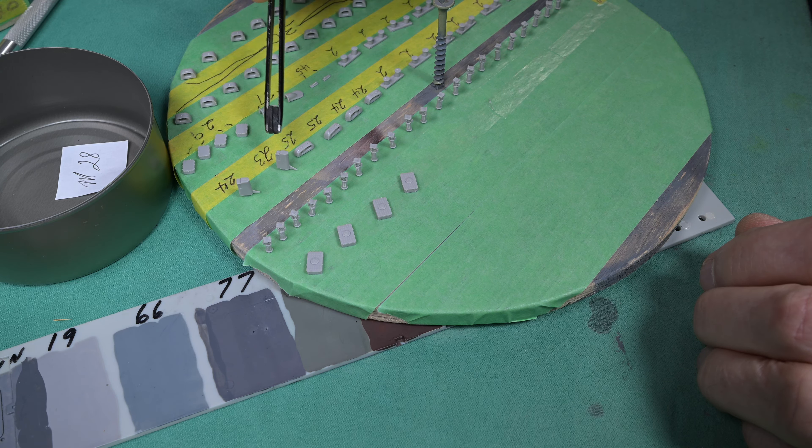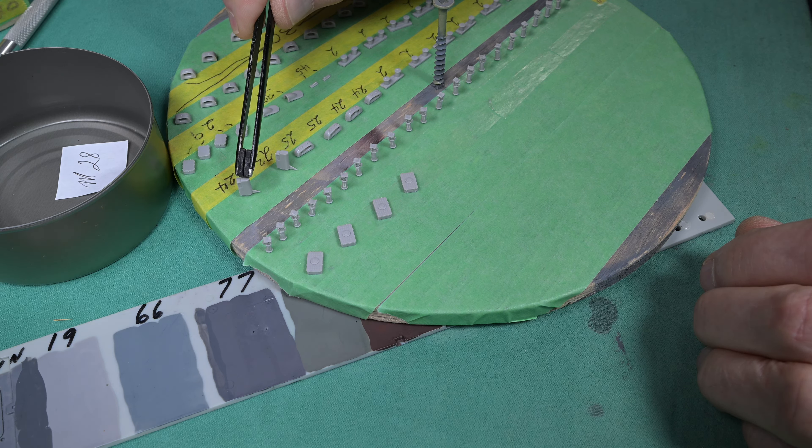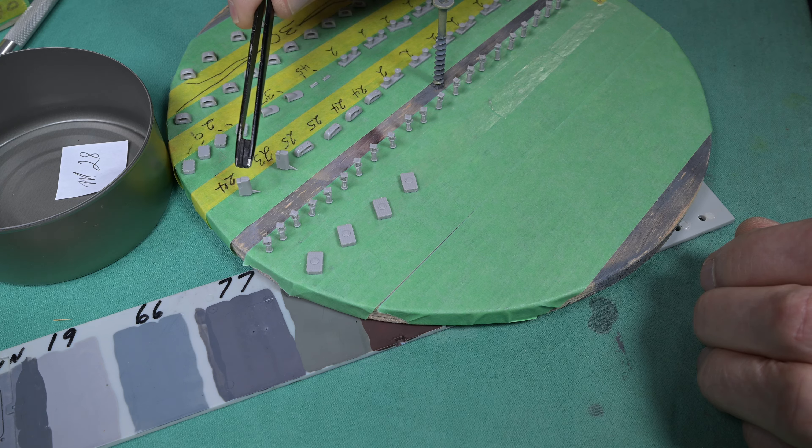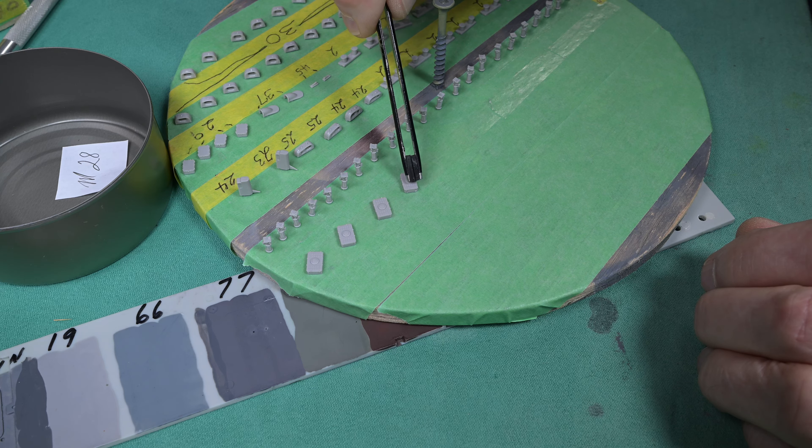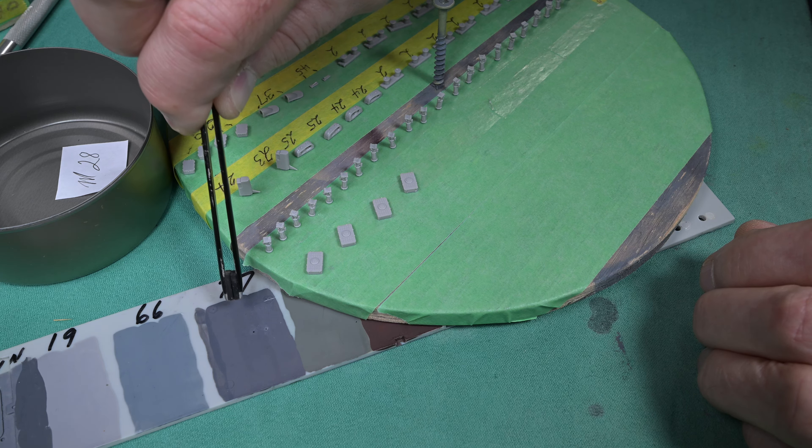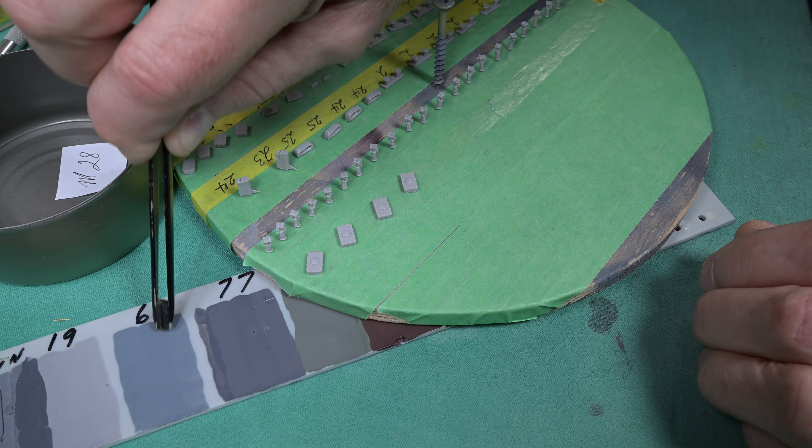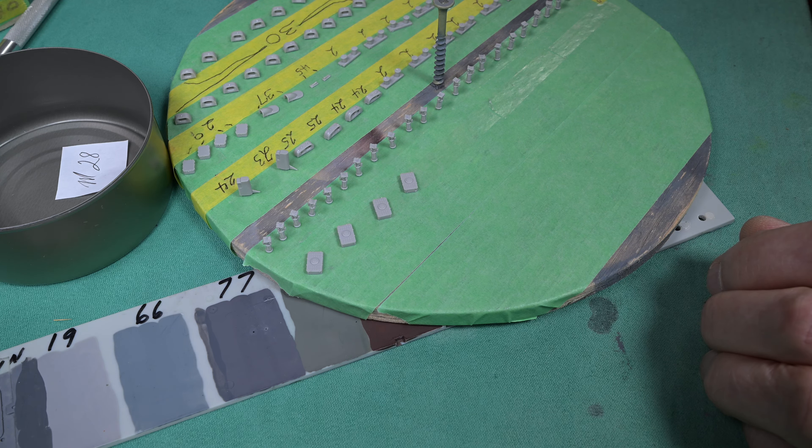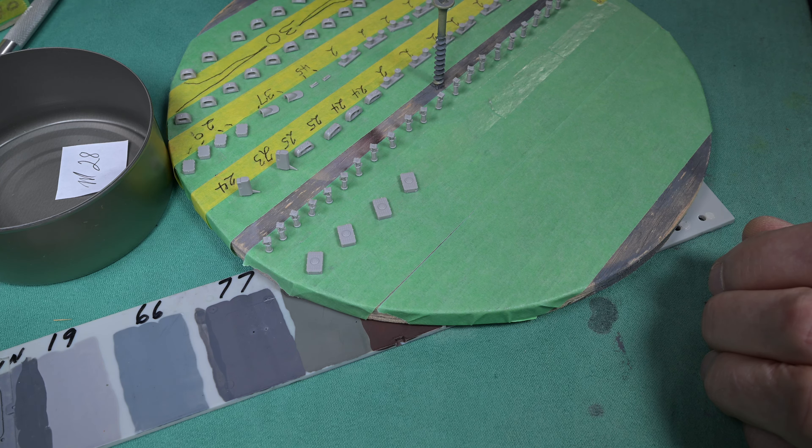But I'm thinking now that maybe I'm better off forgetting about the 77 and just doing all the small pieces the 66. They will contrast against the deck tan anyway. All of this is going to go against the deck tan. For instance, these pieces right here are actually part of the base for a part that goes on top of it. I think maybe I should forget about doing 77 and I'll just do 19 and 66.